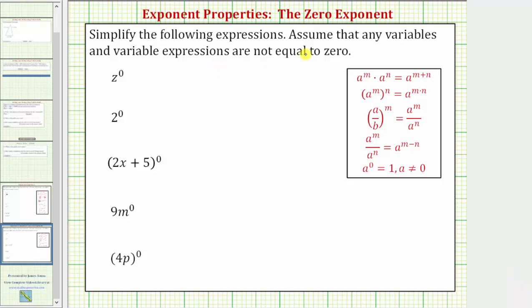We're asked to simplify the following expressions and assume that any variables and variable expressions are not equal to zero. Looking at the expressions, notice how they all deal with the zero exponent property, which is a raised to the power of zero equals one, as long as the base a doesn't equal zero.